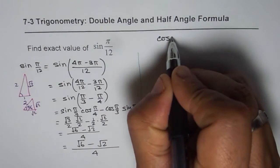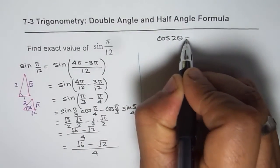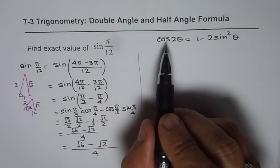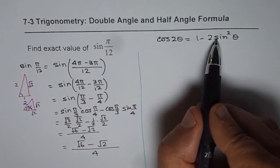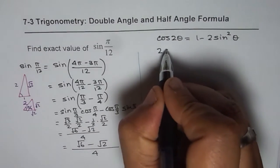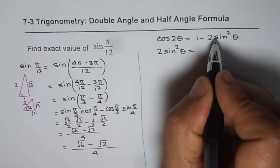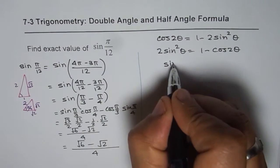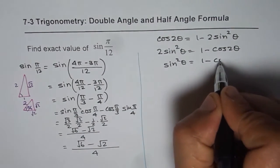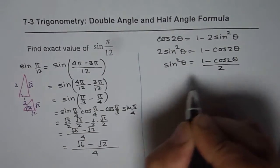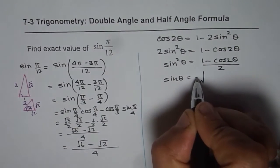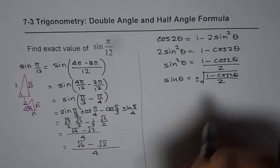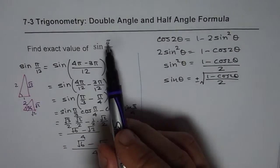The other way to do it is using the double angle formula. We know that cos(2θ) equals 1 minus 2sin²θ. Rearranging, we get 2sin²θ = 1 - cos(2θ), so sin²θ = (1 - cos2θ)/2, and therefore sinθ = ±√((1 - cos2θ)/2). In our case, we want to find π/12.